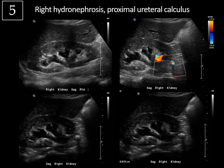What are some things you could do to increase stone shadowing? One thing is to make sure the focal zone is lined up perfectly with the stone — here it's a little bit low, but we still get decent shadowing. You can also narrow the sector beam width, and you can add harmonics. Those three things will all improve posterior acoustic shadowing. Something more labor-intensive you can also do is switch to a higher-frequency ultrasound probe, because as you increase frequency, you increase resolution but decrease beam depth penetration, increasing shadowing.